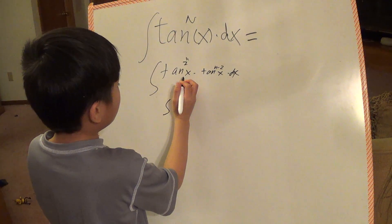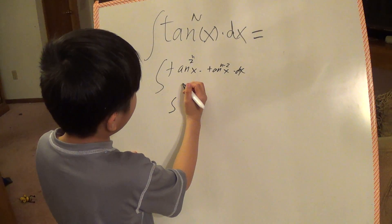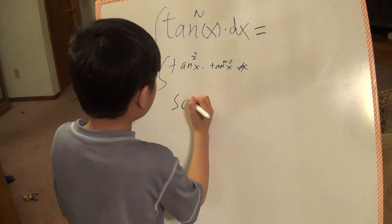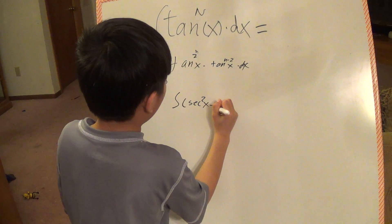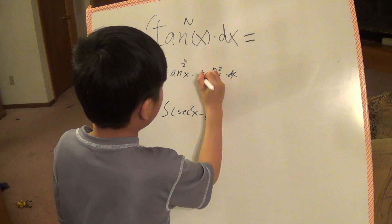Tan squared, you could turn it into parentheses, secant squared x minus 1, and then this part, you copy it.